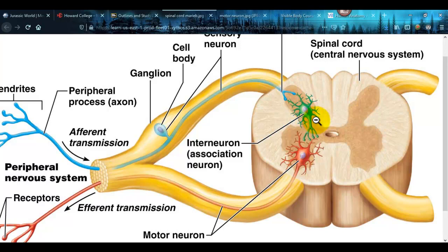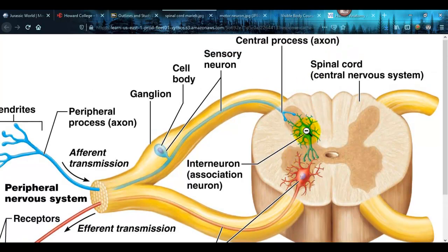This is also a multipolar. This is called an interneuron. It's actually found in the gray matter of the spinal cord. So here are the anterior horns, the posterior horns, the central canal, and that's supposed to be gray. It represents the unmyelinated part.